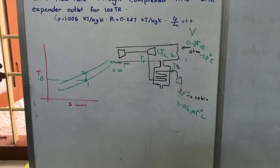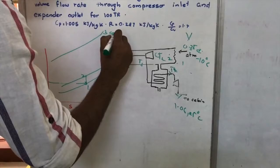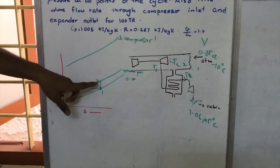Process 2 to 3 is compression. In compression, the compressor pressure P3 is reached. P3 divided by P2 is 4.5, as given in the question.